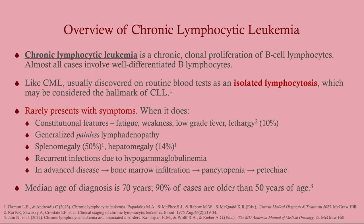Chronic Lymphocytic Leukemia is a chronic condition — not like acute leukemia, which can take you in a matter of months. With chronic leukemias they come on very insidiously. What you're looking at in your blood are mature but clonally proliferated lymphocytes. Like CML, CLL is usually discovered on a routine blood test. Most patients are asymptomatic. You will see an isolated lymphocytosis — not anemia, not thrombocytopenia — a high white count with elevated lymphocytes, which is the hallmark of CLL.